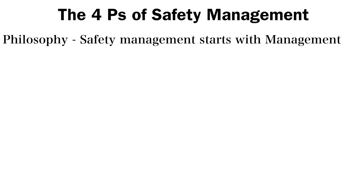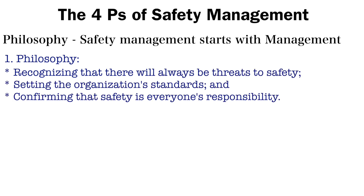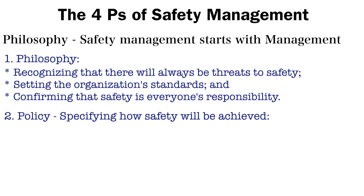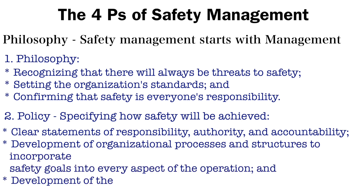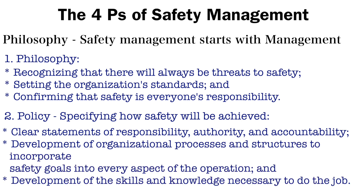Let us discuss the four major points of a safety management system. The first is philosophy. Safety management starts with management. Key points include: recognizing that there will always be threats to safety, setting organizational standards, and confirming that safety is everyone's responsibility. The second is policy — specifically how safety will be achieved, with a clear statement of responsibility, authority, and accountability, and development of organizational processes to incorporate safety goals into every aspect of operations.